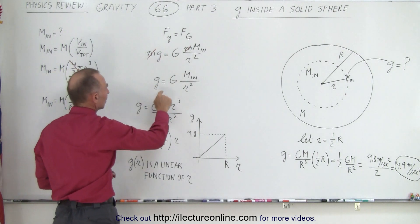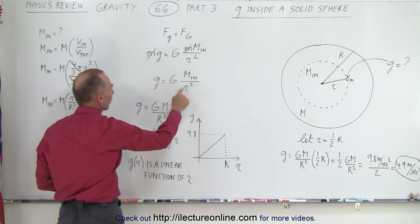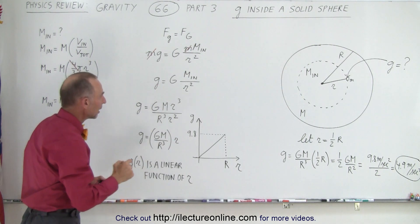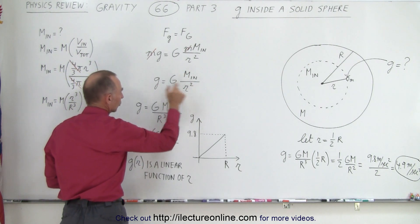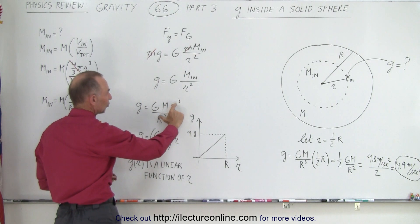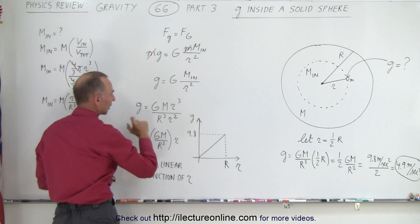Notice, after the m's cancel, you end up with g equals GM over r squared, which is the equation that we saw in the previous video. But now we use the inside mass and the small r squared. The inside mass, of course, will be the total mass times the ratio of little r cubed divided by big R cubed.